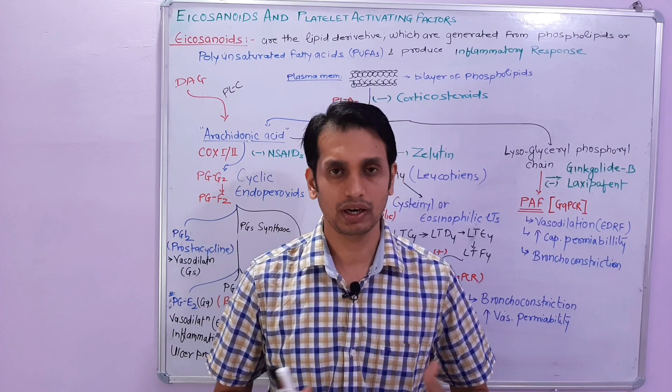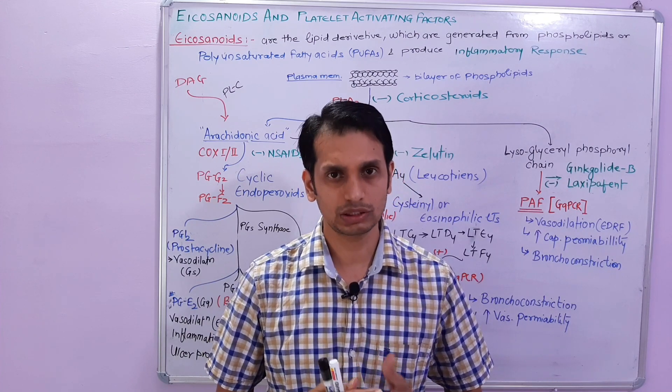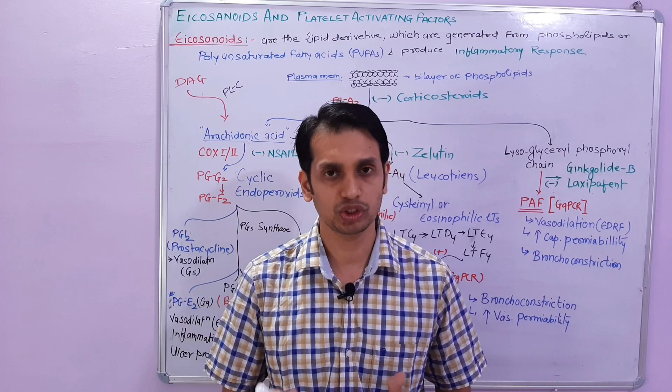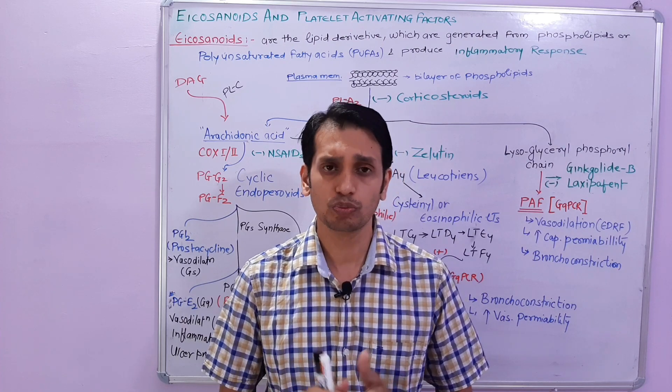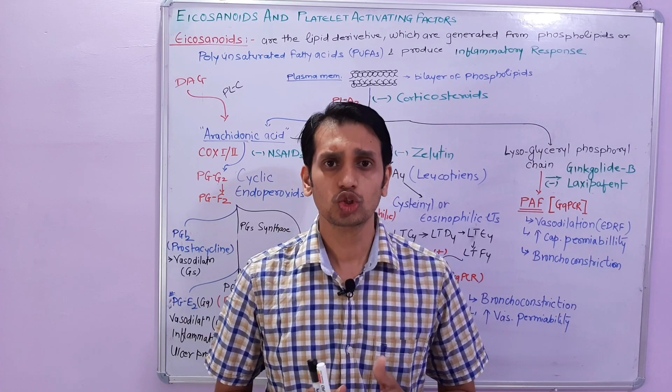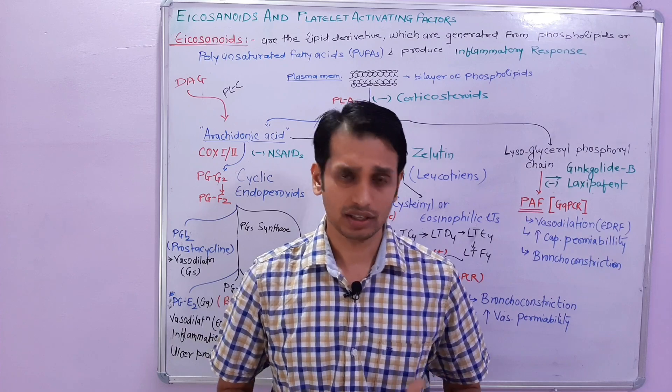Today we are talking about Eicosanoids: Prostaglandins, Prostacyclin, Thromboxane, and Leukotrienes. So let's start.